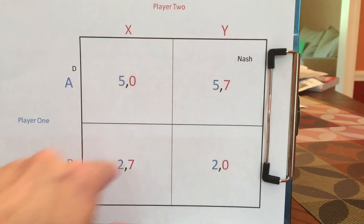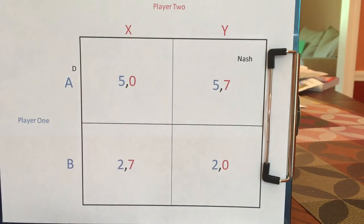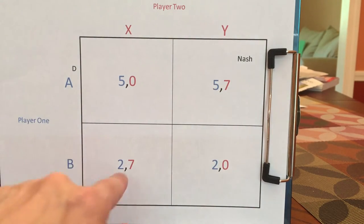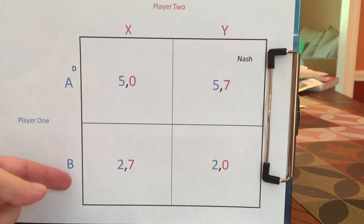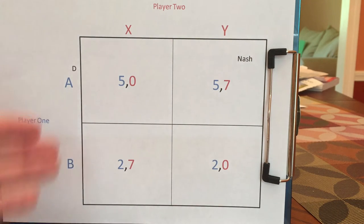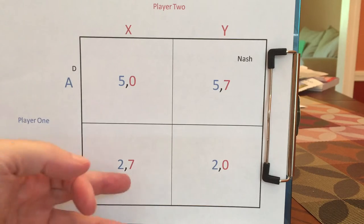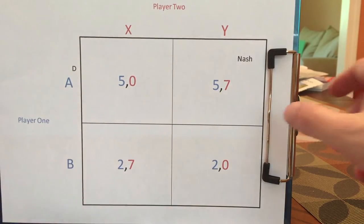So AY is a Nash Equilibrium, and this is the only Nash Equilibrium in the game. Neither of the B outcomes can be Nash Equilibria, because player one is always going to regret playing B — if you play B, you get two; if you play A, you get five.